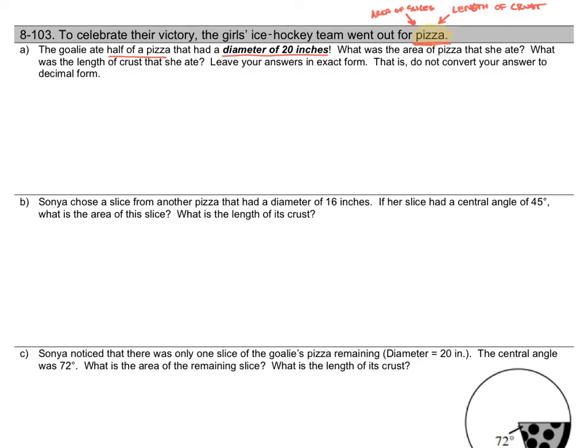We're asked to find the area of the pizza that she ate and the length of the crust that she ate, and it says to leave your answers in exact form. What does this mean? Do not substitute pi equals 3.14. We're going to leave the pi symbol in our answer.